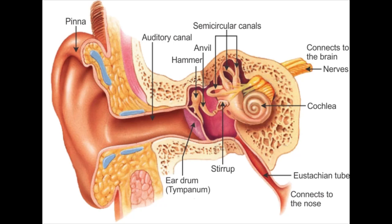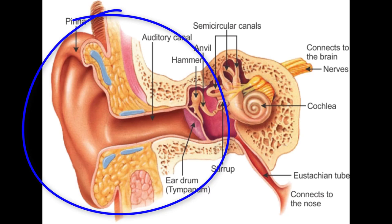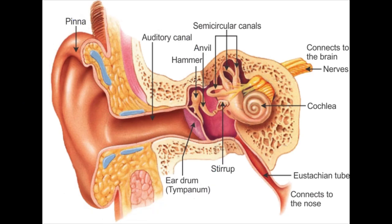A sensorineural hearing loss occurs when the inner ear is not functioning normally. However, a conductive hearing loss is when the vibration of sound is impeded somewhere in the outer or middle ear, preventing it from reaching the inner ear at its full intensity — which is exactly why it's called a conductive hearing loss, because sound cannot be conducted effectively through the entire pathway.